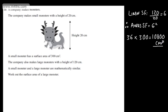So 10,800 centimeters squared. We get the linear scale factor, we square that for the area, and then we simply multiply the surface area of the small monster by 6 squared. If it had been volume, we would have cubed the scale factor.